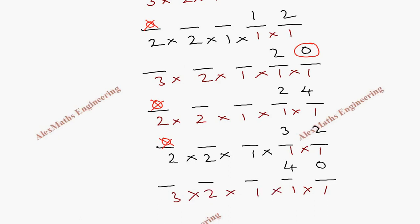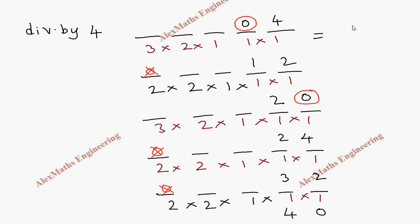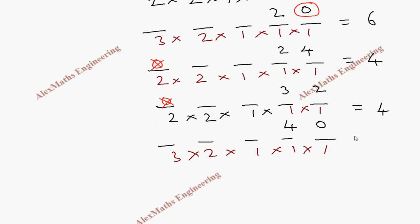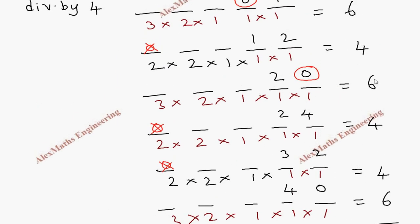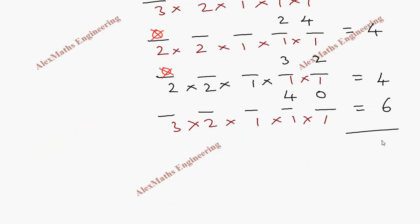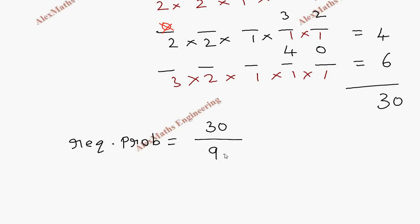Now we calculate all possible ways for each case. Cases where 0 is in the last two digits give 2 × 2 × 1 = 4 arrangements each. Cases where 0 is not in the last two digits give 3 × 2 × 1 = 6 arrangements each. Summing all six cases: 6 + 4 + 6 + 4 + 6 + 4 = 30. So the required probability is 30 out of 96, which simplifies by dividing by 3 to get 10/32, then by 2 to get 5/16.